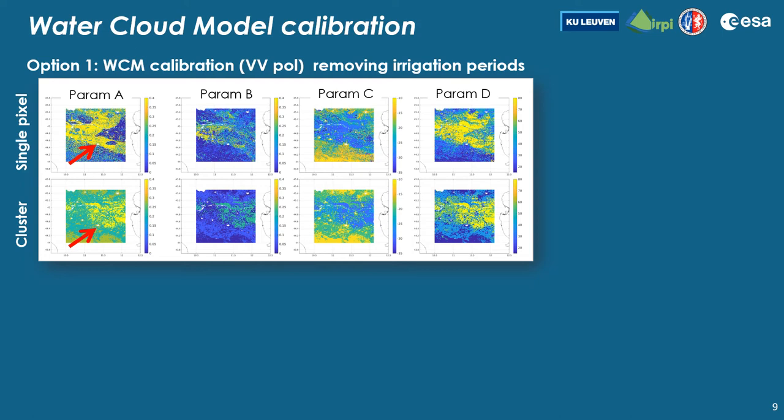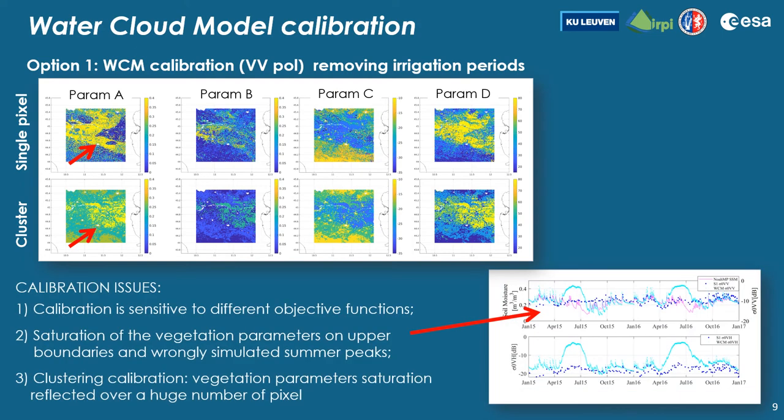We found three calibration issues. The first is that the calibration is sensitive to different objective functions. The second is a saturation of vegetation parameters on upper boundaries, leading to wrongly simulated summer peaks. In the clustering calibration, this saturation is reflected over a large number of pixels with wrong simulations.